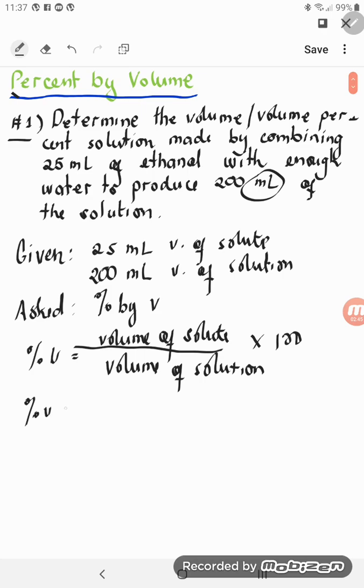Percent by volume is equal to the volume of solute, the volume of solute is 25 ml, over the volume of solution, which is 200 ml, times 100.